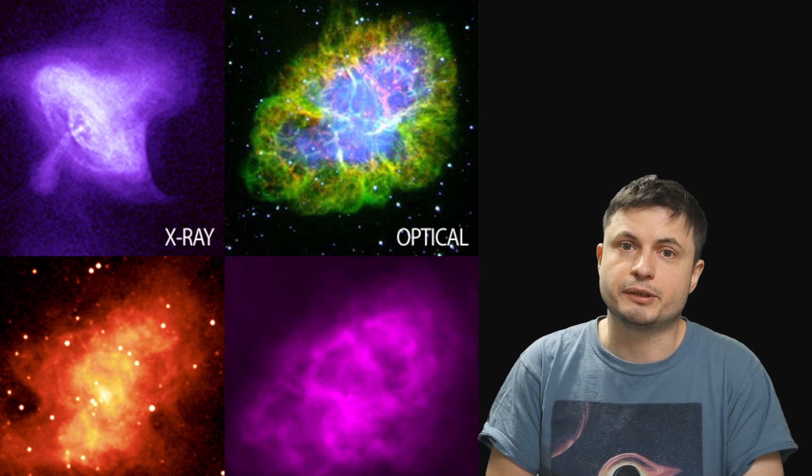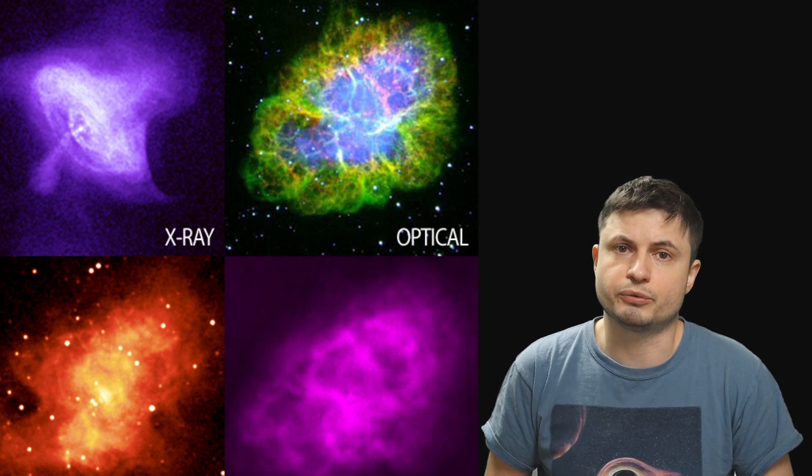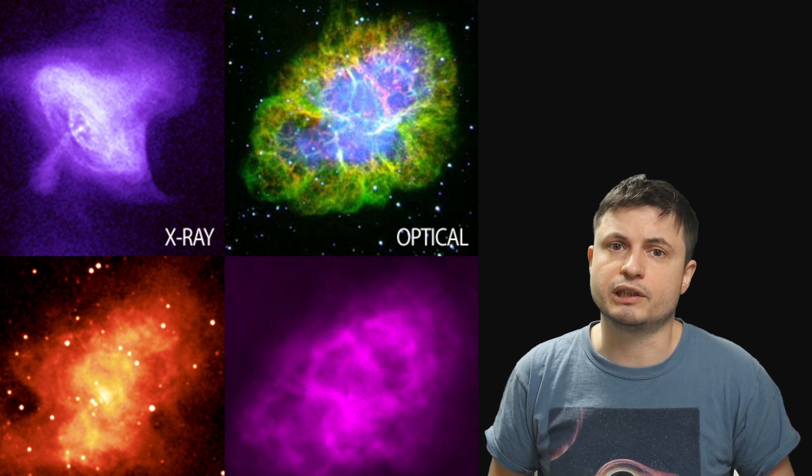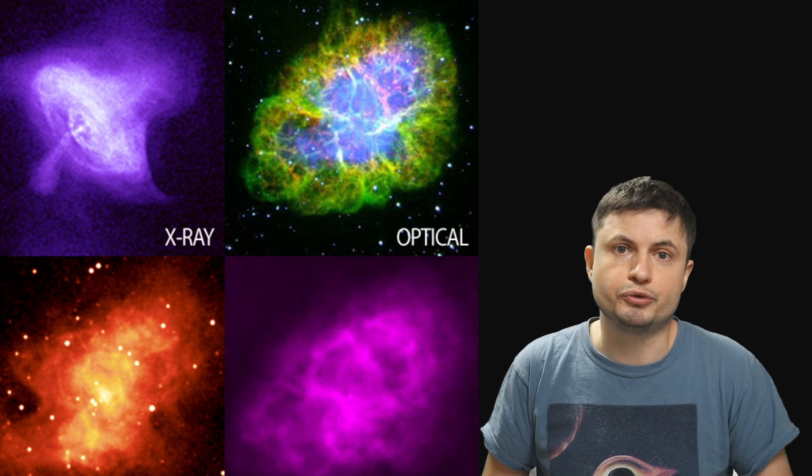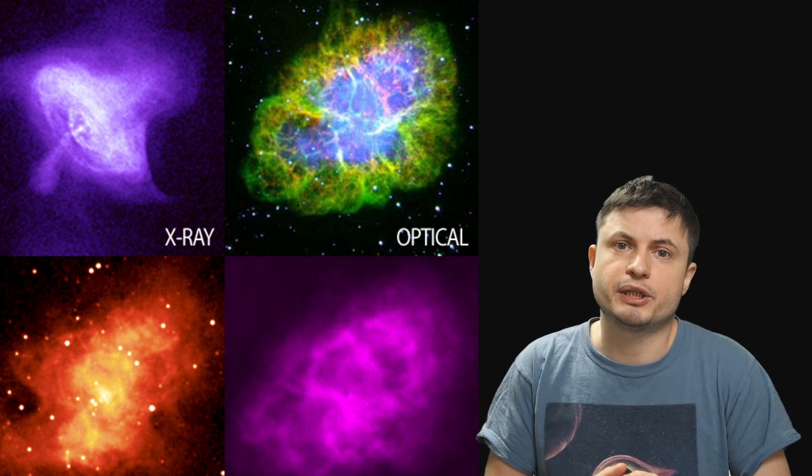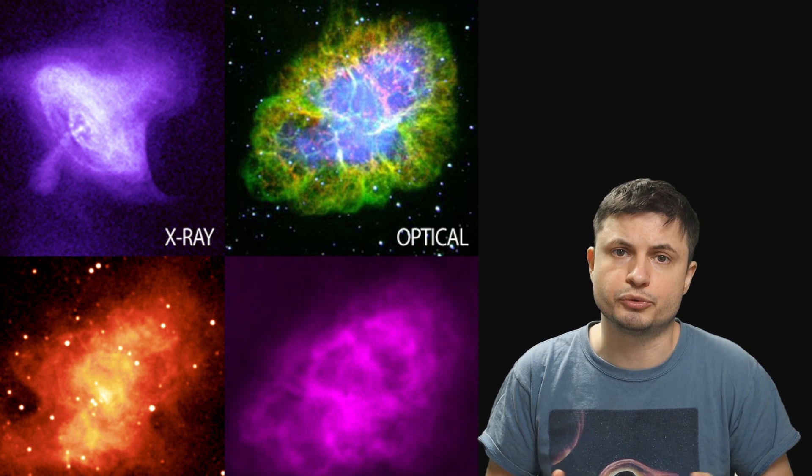But before we talk about what they actually found in the paper it's also important to understand that generally nebula can be produced different ways. For example going back to the Crab Pulsar here in Crab Nebula this was produced as a result of a supernova where a relatively massive and relatively large star essentially exploded producing type 2 supernova and then leaving behind a neutron star that's now producing all of these flashy effects we're observing from planet earth.